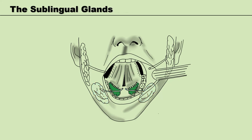The sublingual glands are the smallest of the three main salivary glands, located between the tongue and the mandible. They open as a series of ductules that run along the sublingual fold. There are also many tiny minor salivary glands in the mucosa of the tongue, palate, and lips, but we're not going to look at those further today.